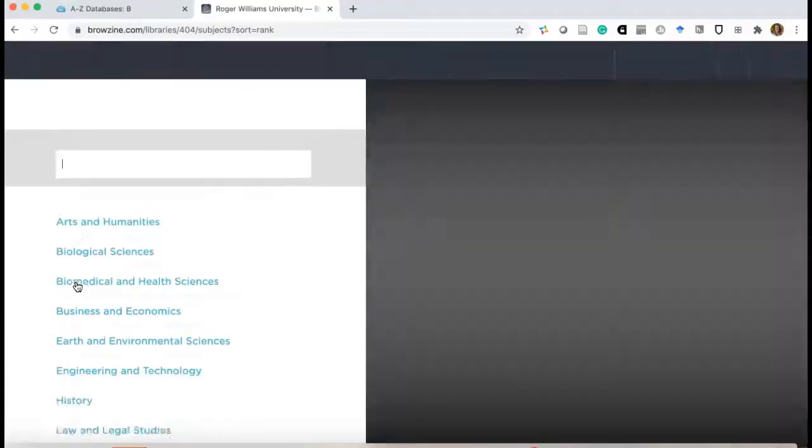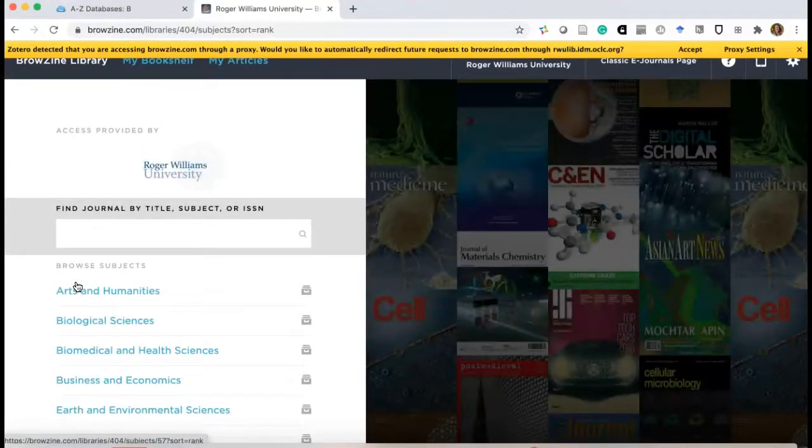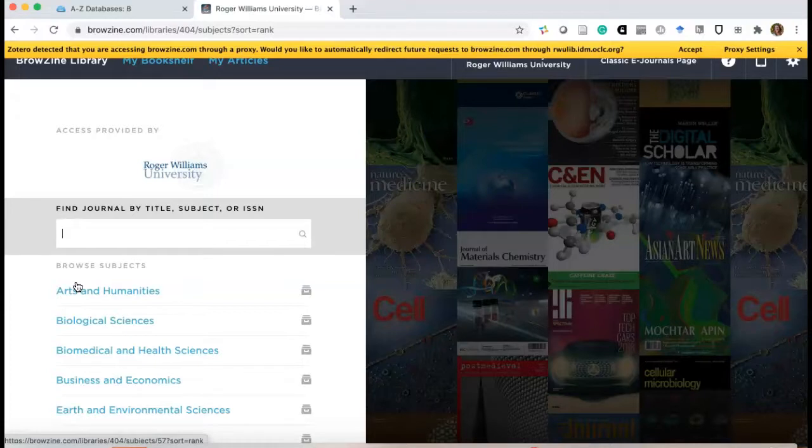You might be asking yourself, why would I want to search this way versus keyword searching? Well, Browzine lets you directly browse different articles in a particular journal issue, which can be extremely helpful if you find an article elsewhere that directly relates to your narrowed area of research.